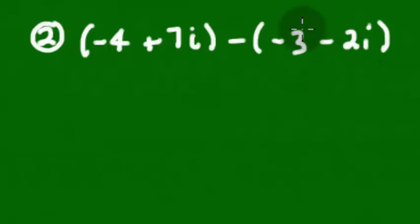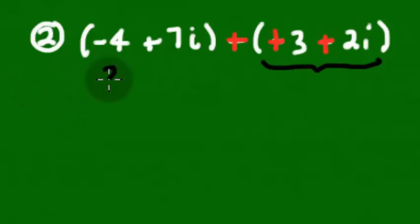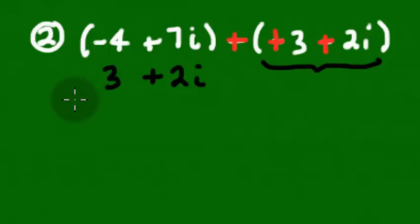Again, we're going to take the opposite of everything in the second polynomial. We're going to take the opposite of negative 3 — that makes it a positive 3. And the opposite of negative 2 makes that a positive 2. Once we've done that, it's no longer a subtraction problem — it's an addition problem. Just like we did with the first problem, we take our second polynomial and write it underneath the first, being cautious to line up like terms: the A part under the A part, the B part under the B part.